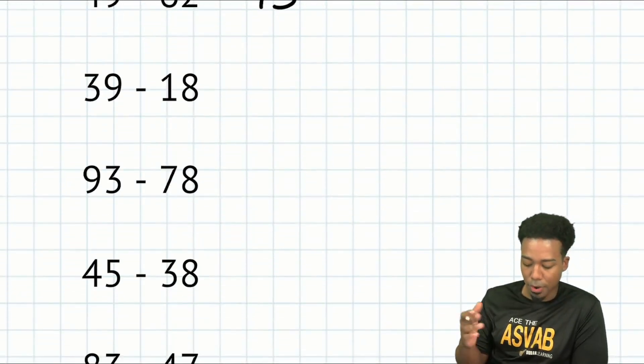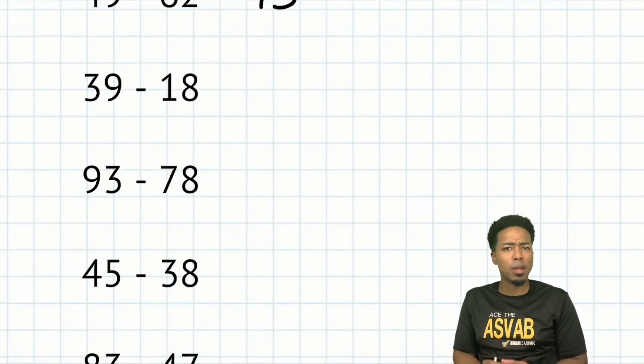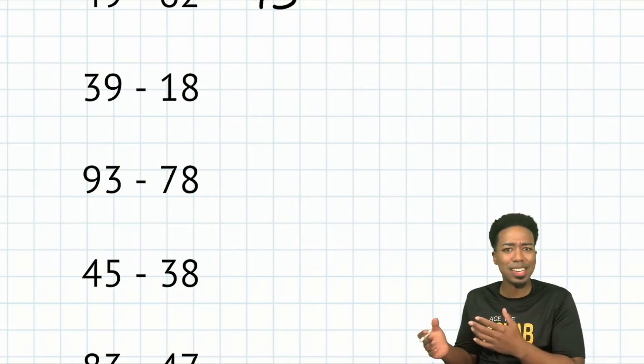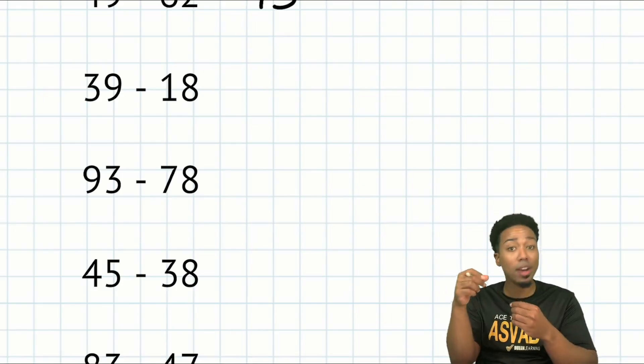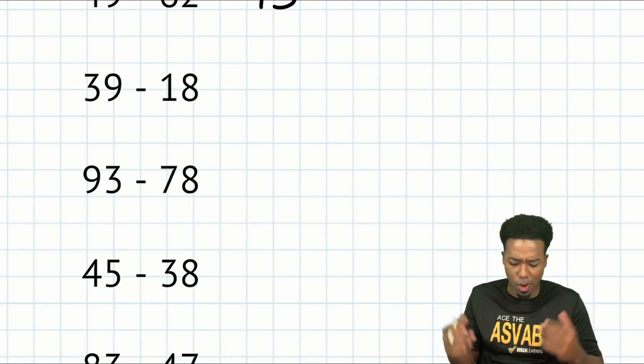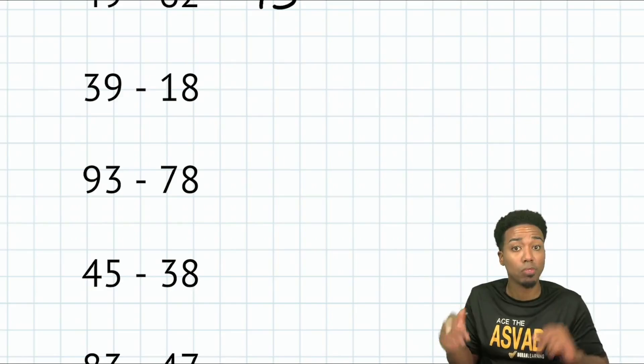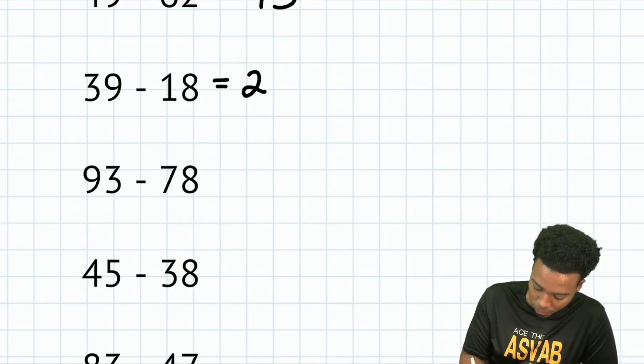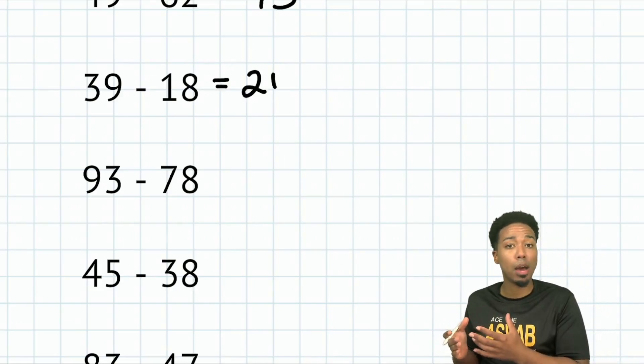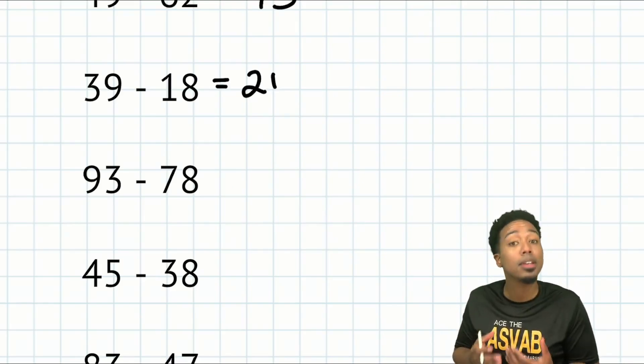Next, 39 minus 18. No mental math needed because 39 minus 18 doesn't force you to borrow one anywhere. We can just take away the 18, that'll end up being 21. We're good.